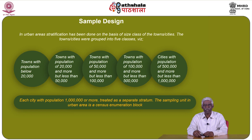The towns and cities were grouped into five size classes based on population. The sampling unit in urban areas is a census enumeration block.